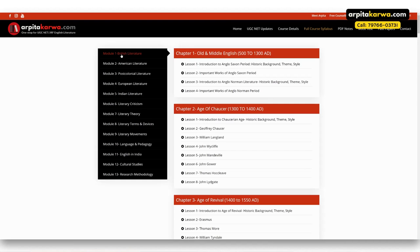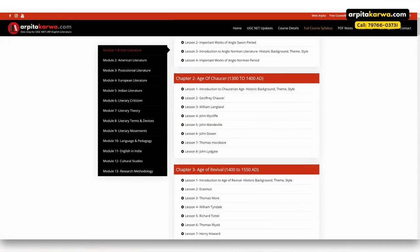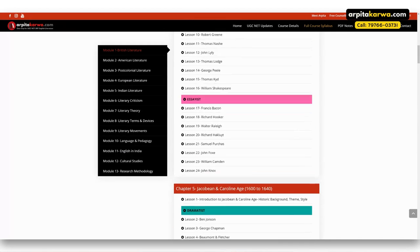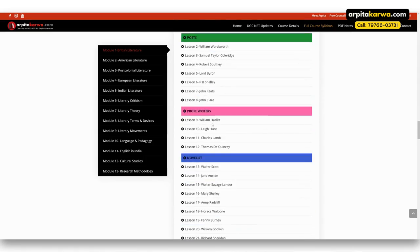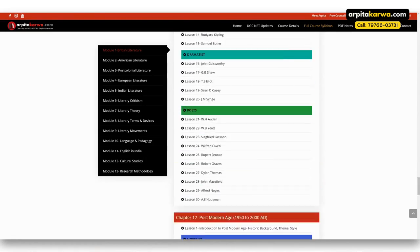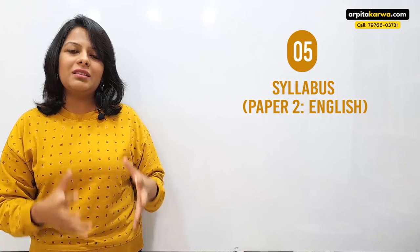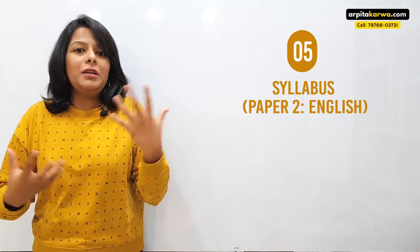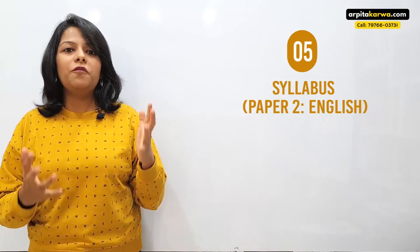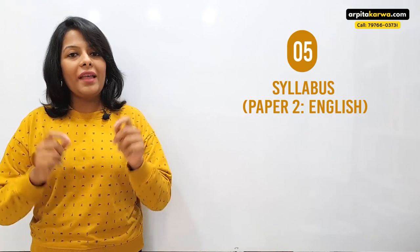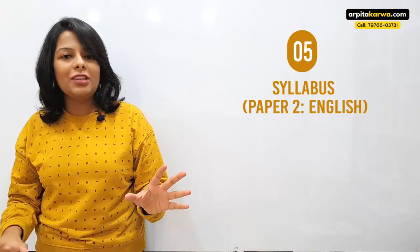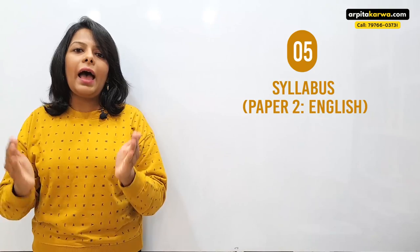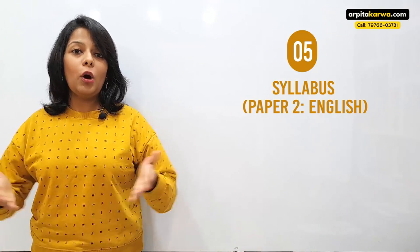This is how literature must be studied — chronologically and by country — only then does it make sense. All this categorization is available on my website. You can go through it, make a list of important writers, and begin your preparation. This approach will help you know exactly what to study each day, because the TGT PGT syllabus can seem overwhelming if you try to tackle it all at once.